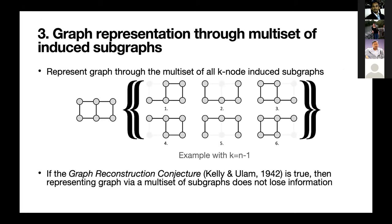We decided to look at graph theory and specifically the graph reconstruction conjecture. If the graph reconstruction conjecture is true, then a graph can be defined by its subgraphs — the multiset of subgraphs obtained by removing one node at a time from the graph. This multiset uniquely determines the graph. While the conjecture is not true for directed graphs, we can encode directions as edge attributes. If the reconstruction conjecture is true, then representing a graph through its subgraphs loses no information. And importantly, if you look at subgraphs of these very symmetric graphs, the subgraphs are very different — a graph neural network can now distinguish them.